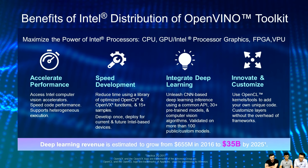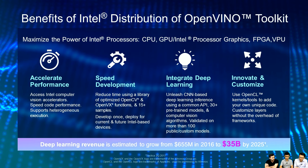According to market data, deep learning revenue is estimated to grow significantly from $655 million in 2016 to $35 billion by 2025. By adopting the OpenVINO toolkit, you can bring your solution to market faster and capture that revenue. This is one of the most important benefits of OpenVINO.